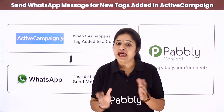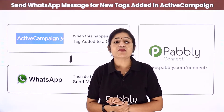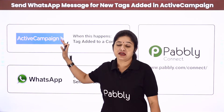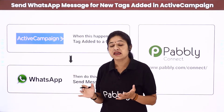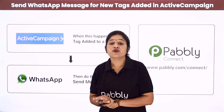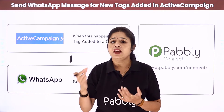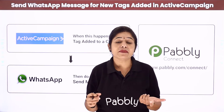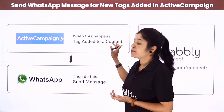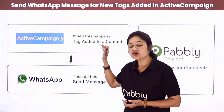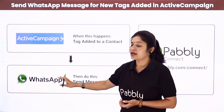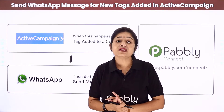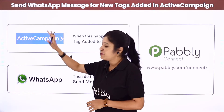Let us understand by taking an example: you own a software company and you are providing some products to your customers. You are maintaining your customer database in your ActiveCampaign account, which is a sales, marketing, and CRM automation software. You want that whenever a customer subscribes to any of your products — for example Pably Connect, Pably Subscription Billing, or Pably Email Marketing — and you add a tag to that particular contact in your ActiveCampaign account, the customer should receive a WhatsApp message such as 'Thank you for subscribing to this product.'